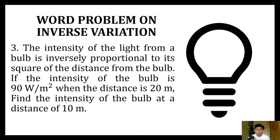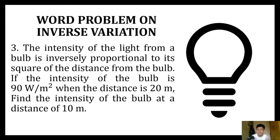Let's have another word problem. The intensity of the light from a bulb is inversely proportional to the square of the distance from the bulb. If the intensity of the bulb is 90 watts per square meter when the distance is 20 meters, find the intensity of the bulb at a distance of 10 meters.